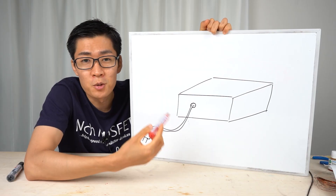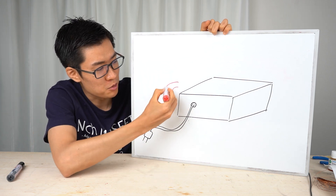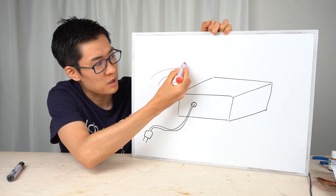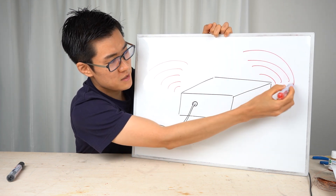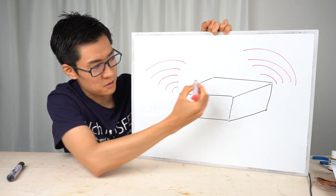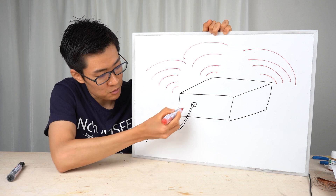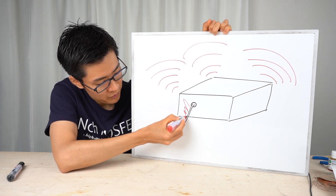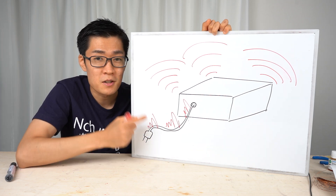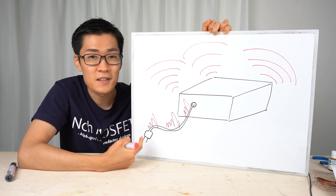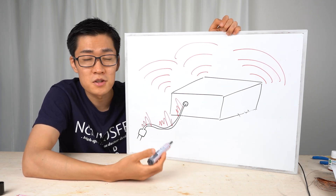I'll briefly explain about conducted noise and radiated noise. Radiated noise is a type of noise that is emitted from the device and propagates through the air — or more accurately, through space. Conducted noise is the type of noise that propagates through the power cord and adversely affects other devices plugged into the outlet. There's also another type of noise called induced noise.